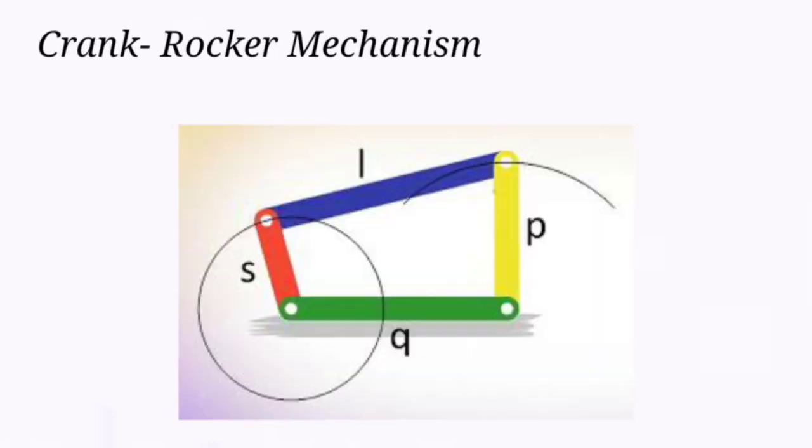What is crank rocker mechanism? A mechanism in which one of the links is crank and the other link is rocker is called a crank rocker mechanism.